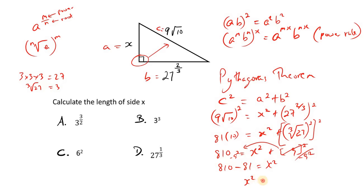So we have x squared is equal to, now we want to find the difference between 810 and 81. Using our calculator, 810 minus 81, and that gives us 729.